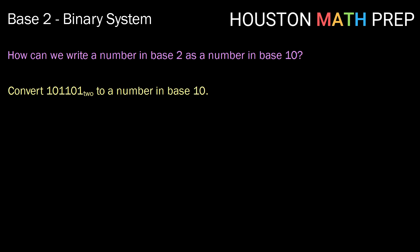Let's think about how we can write a number in base 2 as a number in base 10. Can we convert 101101 base 2 to base 10? Certainly. We just need to remember that each digit represents a power of 2, starting with 2 to the 0 power and increasing by 1. Each digit tells us how many groups of that power of 2 we have. This number has 1 group of 2 to the 5th, or 32,